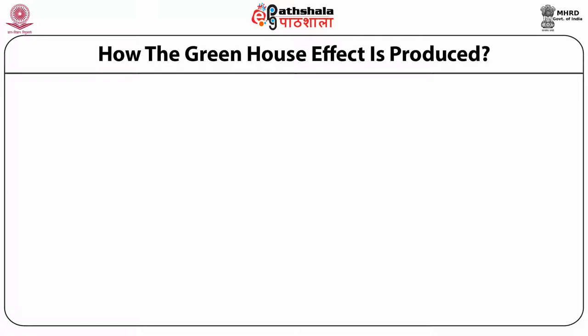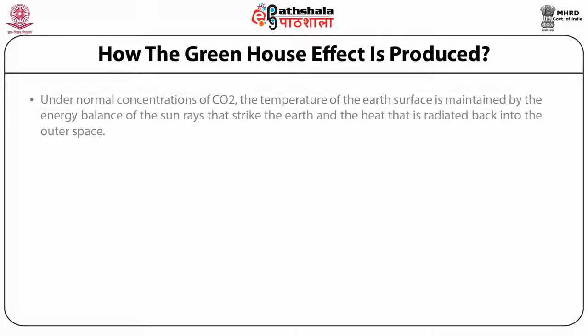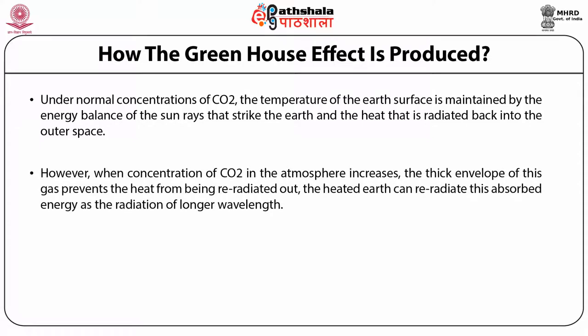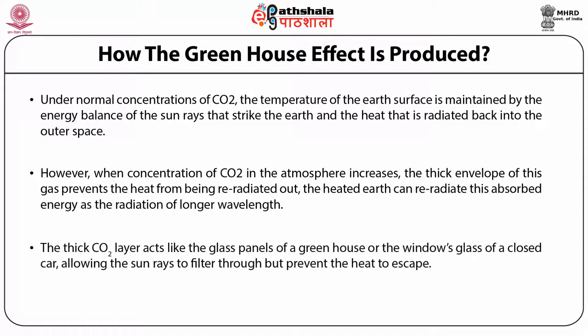How is the greenhouse effect produced? Under normal concentrations of carbon dioxide, the temperature of the earth's surface is maintained by the energy balance of sun rays that strike the earth and the heat radiated back. However, when the concentration of carbon dioxide increases, the thick envelope of this gas prevents heat from being re-radiated out. The thick carbon dioxide layer acts like the glass panels of a greenhouse or the window glass of a closed car, allowing sun rays to filter through but preventing heat from escaping.